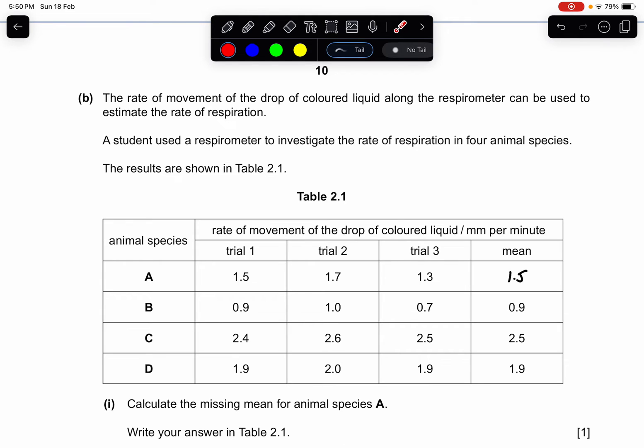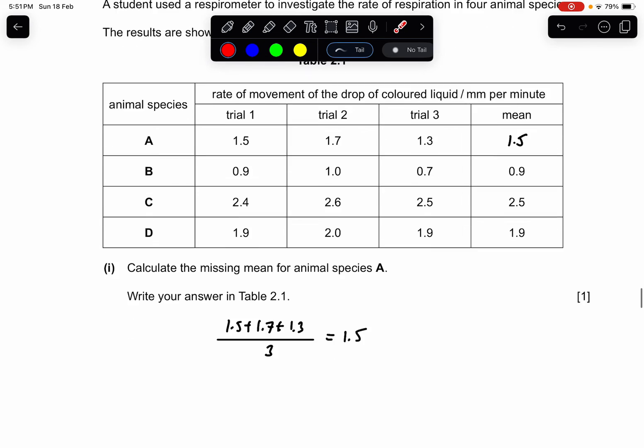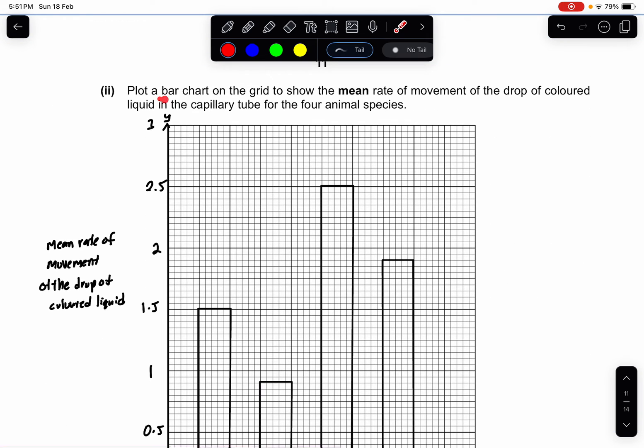B: The rate of movement of the drop of colored liquid along the respirometer can be used to estimate the rate of respiration. A student used a respirometer to investigate the rate of respiration in 4 animal species. The results are shown in Table 2.1. Part 1 asks you to calculate the missing mean of animal species A. Write your answer in Table 2.1. So you take this, this, this, this, divide by 3, you get 1.5. Very simple mathematics.